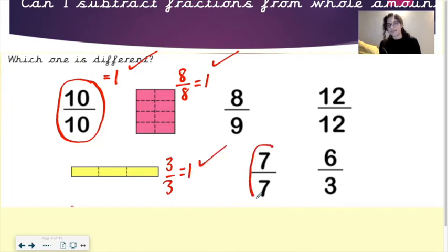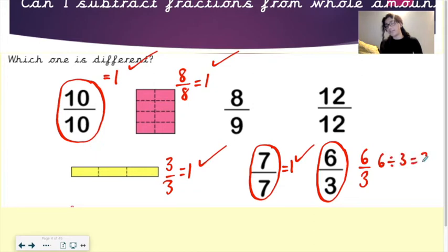7 sevenths. 7 sevenths is also equal to 1, because 7 parts of 7 parts has been shaded in. So 6 thirds. Now when you simplify that, the way to simplify it is by doing 6 divided by 3. So 6 divided by 3, which is equal to 2, which is a whole number.